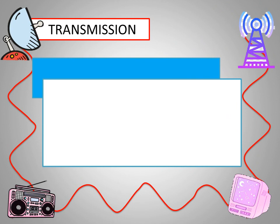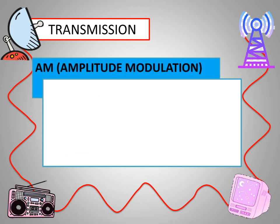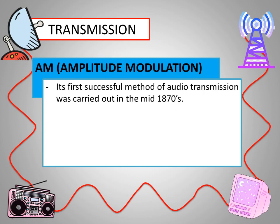Radio waves can be transmitted in two forms: either AM or FM frequency. AM stands for amplitude modulation. Its first successful method of audio transmission was carried out in the mid-1870s.